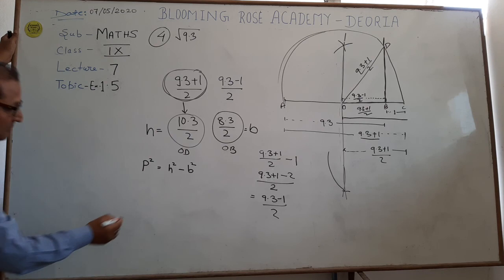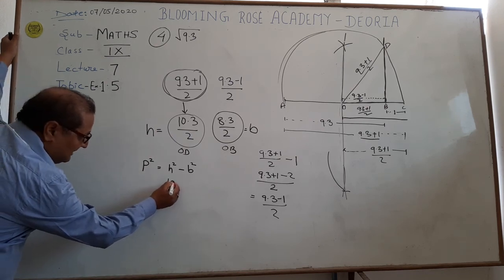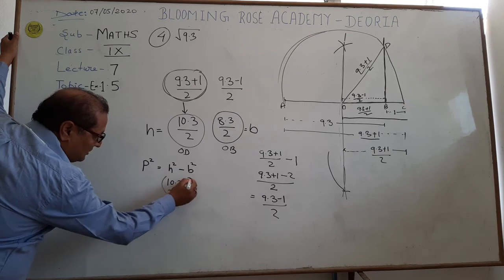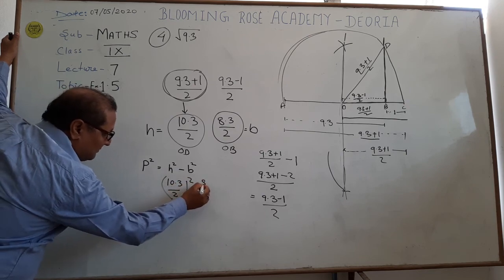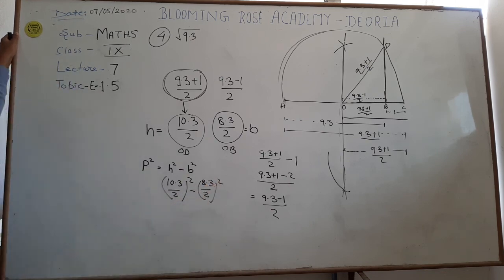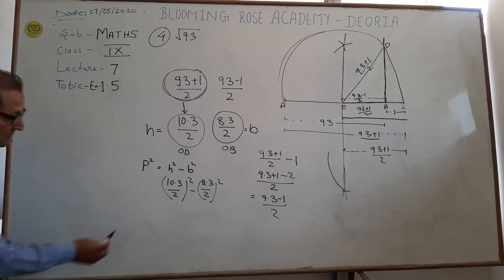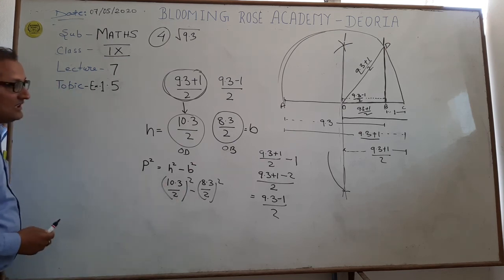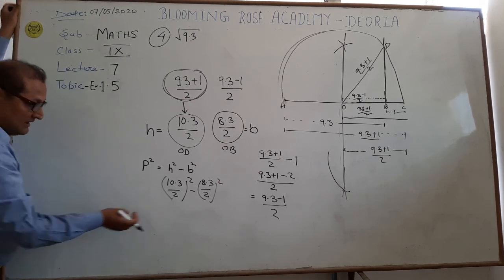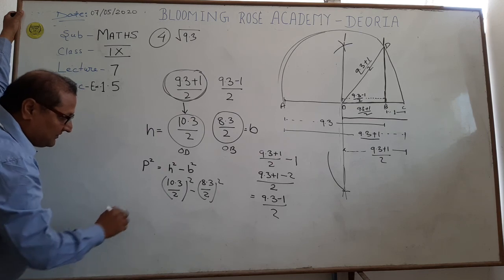H, if you look at this, what is 10.3 by 2 whole square minus 8.3 by 2 whole square. How can we solve this? Normally, we have to solve this problem. But, this is A square minus B square. We have to solve this problem. One time, we have to take A plus B. Second time, we have to take A minus B.